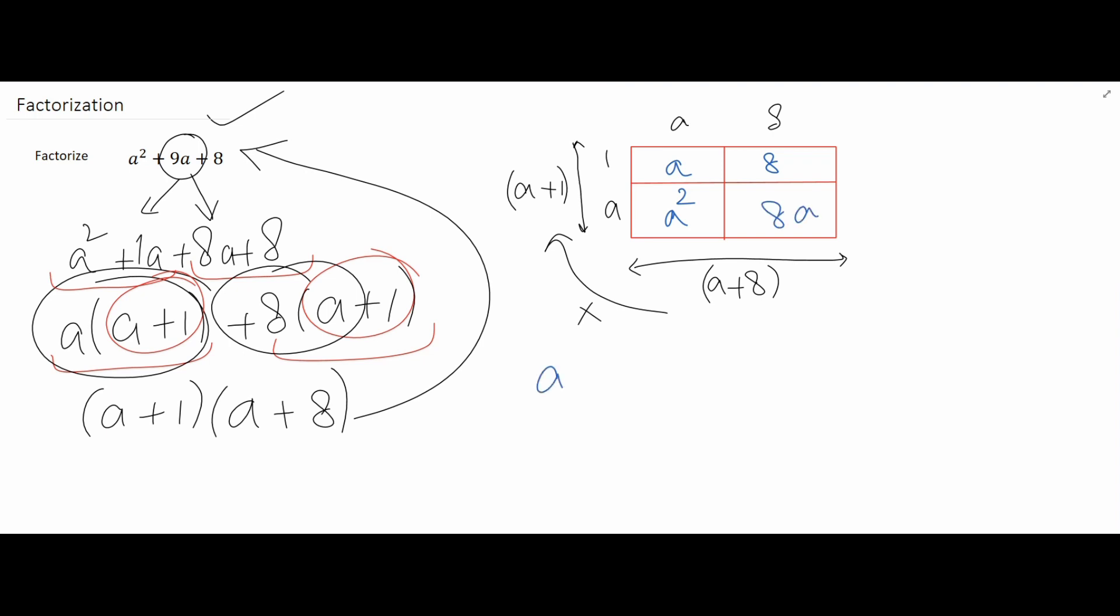So that means if we multiply the two brackets a plus 1 and a plus 8 we will get a plus 8 plus a squared plus 8a. And by further arrangement and simplification we get a squared plus 9a plus 8. So a squared plus 9a plus 8 is the expanded form of a plus 1 and a plus 8.